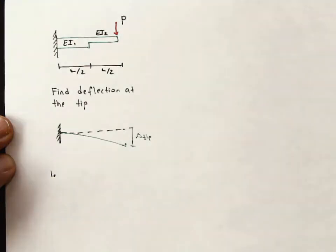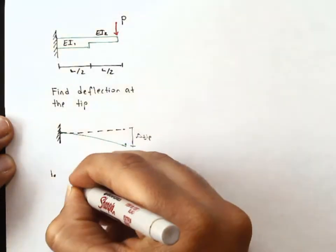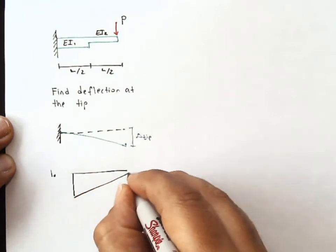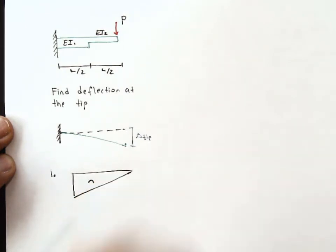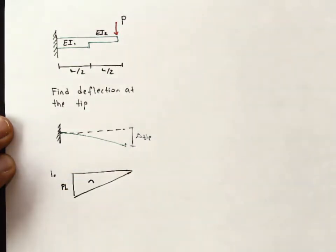Step one, real moments. This should be very quick. We've memorized the moment diagram for a cantilever beam. We know that it's triangular, concave down, magnitude PL.